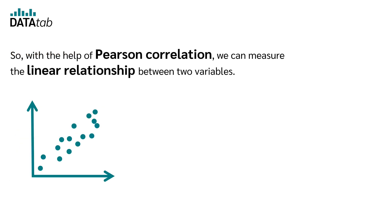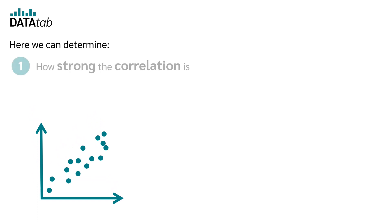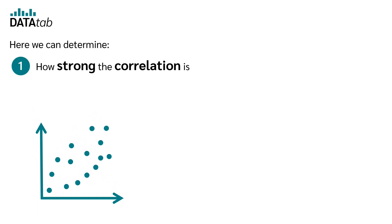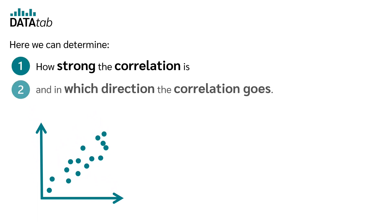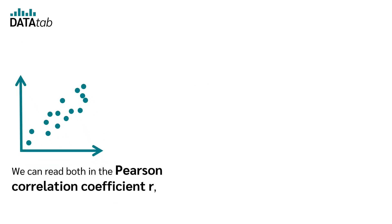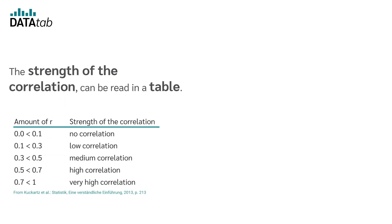So with the help of Pearson correlation, we can measure the linear relationship between two variables. Here we can determine how strong the correlation is and in which direction the correlation goes. We can read both in the Pearson correlation coefficient r, which is between minus 1 and 1. The strength of the correlation can be read in a table.